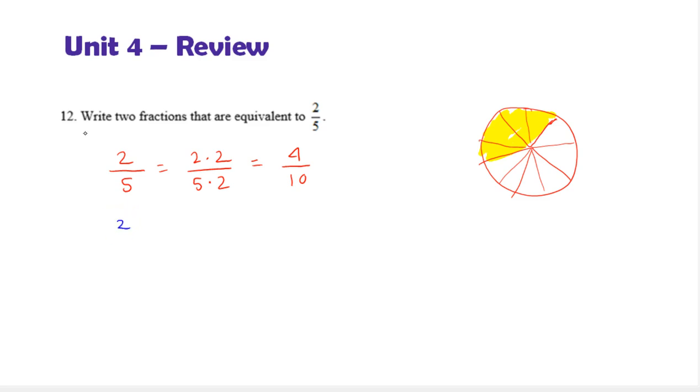We can do this with any number. I'm going to pick 7. I'm not going to draw this because it would be not fun at all. But you can imagine, I could have cut each of the 5 pieces into 7 equal pieces. That would give us a total of 35 pieces, and the 2 would each be cut into 7 pieces, so that would be 14 pieces. An equivalent fraction has the same shaded amount relative to the unit, but it's cut into different sized pieces.